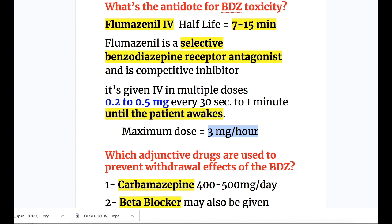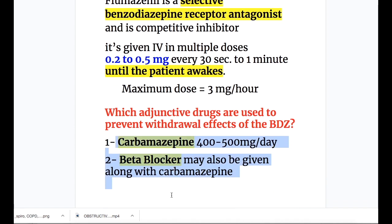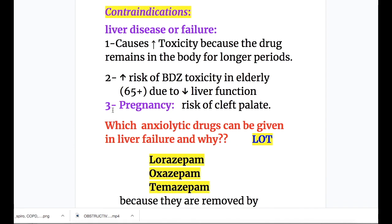The maximum dose of flumazenil is 3 milligrams per hour. Adjunctive drugs used to prevent withdrawal effects of benzodiazepines are: number one carbamazepine 400 to 500 mg per day, and number two beta blockers. So three drugs are used for benzodiazepine toxicity: flumazenil IV, carbamazepine, and beta blockers.